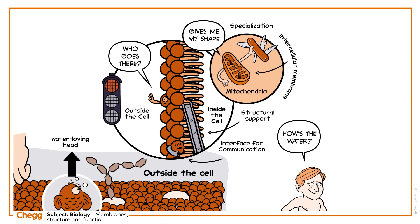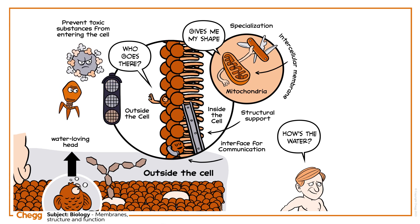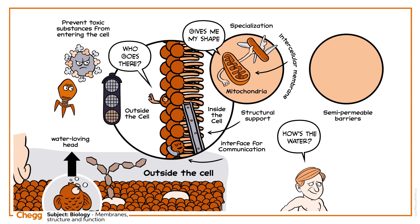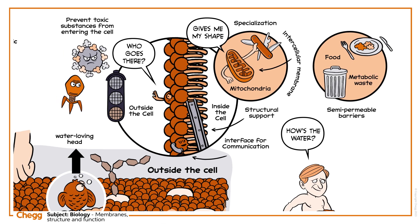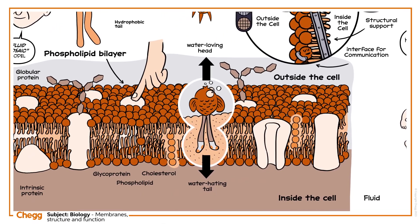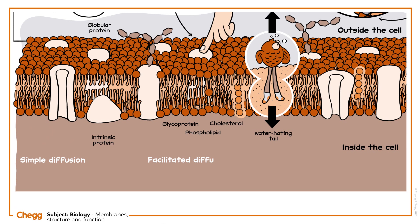Membranes prevent toxic substances from entering the cell, but they don't prevent everything from passing through — they are semi-permeable barriers. Only select molecules, like nutrients, can enter the cell, and only select substances, like metabolic wastes, can leave. Substances can cross membranes through simple diffusion, facilitated diffusion, or active transport.